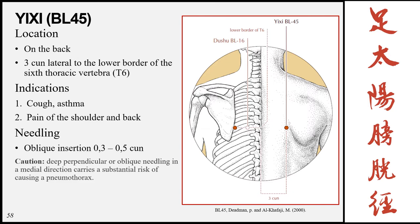Next is Yishi, Bladder 45, located on the back three cun lateral to the lower border of the sixth thoracic vertebra T6. This point is used for conditions such as cough, asthma, and pain of the shoulder and back. Needling is oblique insertion 0.3 to 0.5 cun, directed inferiorly, with caution against deep perpendicular insertion or oblique needling in a medial direction.